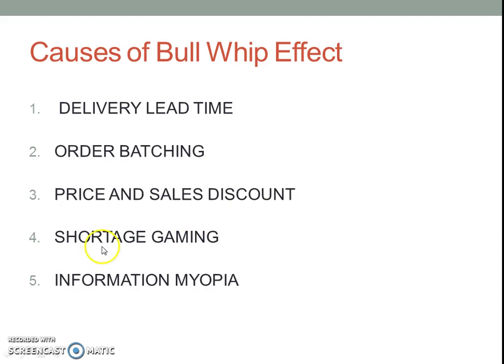The fourth cause is Shortage Gaming. Customers, when they perceive that there is a shortage of an item, tend to place orders on multiple suppliers. This placement of orders on multiple suppliers gets cancelled when one of the supplies is delivered. This sudden unnecessary placement of additional demands on many suppliers followed by cancellation can also lead to Bullwhip Effect.